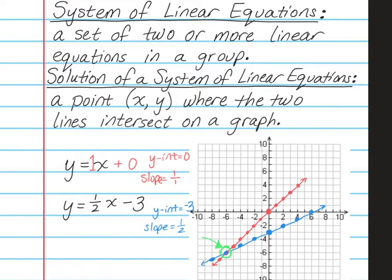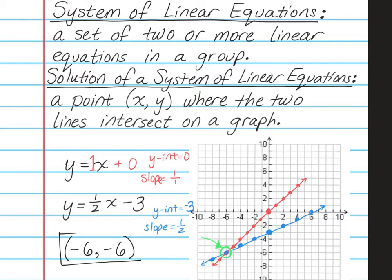That intersection point is the solution of this system of linear equations. When we write our solution, we write it as an xy point. Looking at the graph, the point is 6 to the left — so negative 6 — and 6 down — also negative 6. So the solution is negative 6 comma negative 6, and that is my answer for this system of linear equations.